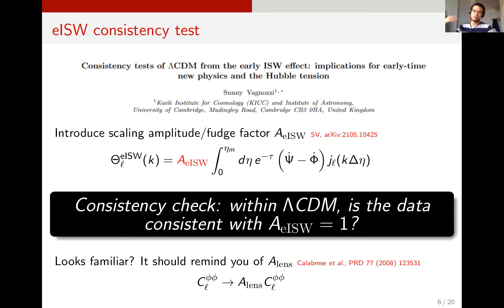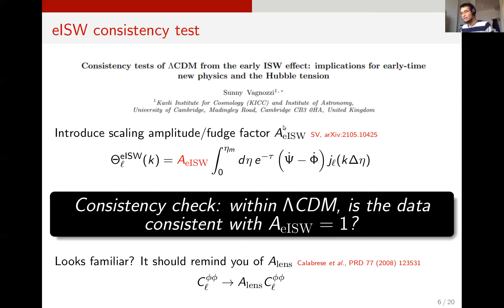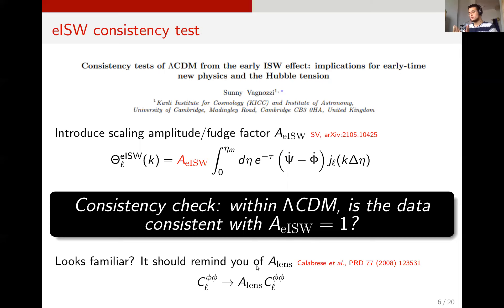If you have a substantial amount of new physics at early times, you should leave an imprint on the early ISW effect, because it's going to change how potentials grow or decay with time. This motivates an early ISW based consistency test. The test is simple: take the early ISW source term, rescale it by a scaling amplitude — a fudge factor — which I call A_EISW, and check whether within Lambda CDM this is consistent with one from Planck data. If this looks familiar, it's reminiscent of the better-known A_lens, which rescales the CMB lensing power spectrum amplitude.